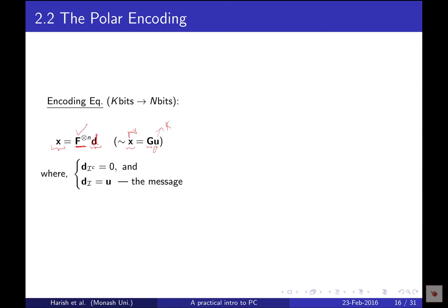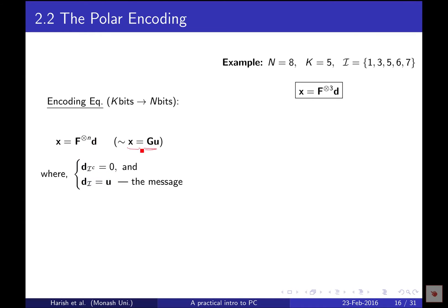Here, d is not the message directly — rather the message is embedded inside d. And this is not a generator matrix; it contains the generator matrix, as you will see. How d is formed: take the information bit indices, embed your message there, and then simply freeze the rest of the bits — force zeros at those indices. The message varies based on what you transmit, but the frozen positions are always zero.